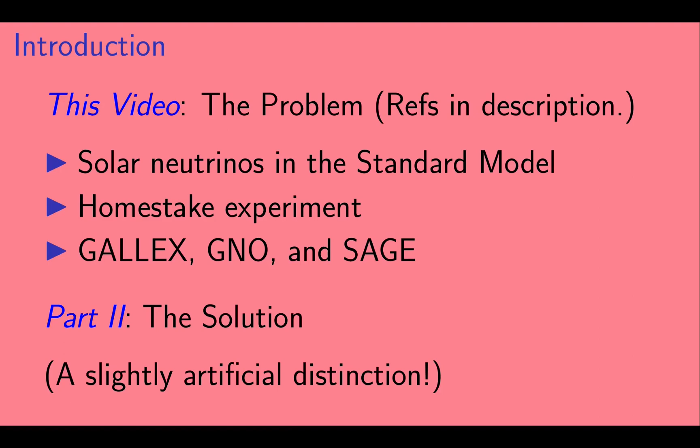In part two, we'll talk about how the solar neutrino problem was solved and the experimental results that went into that. We should note that dividing the experiments into those that found the problem and those that solved the problem is somewhat artificial. The distinction is rough at best.